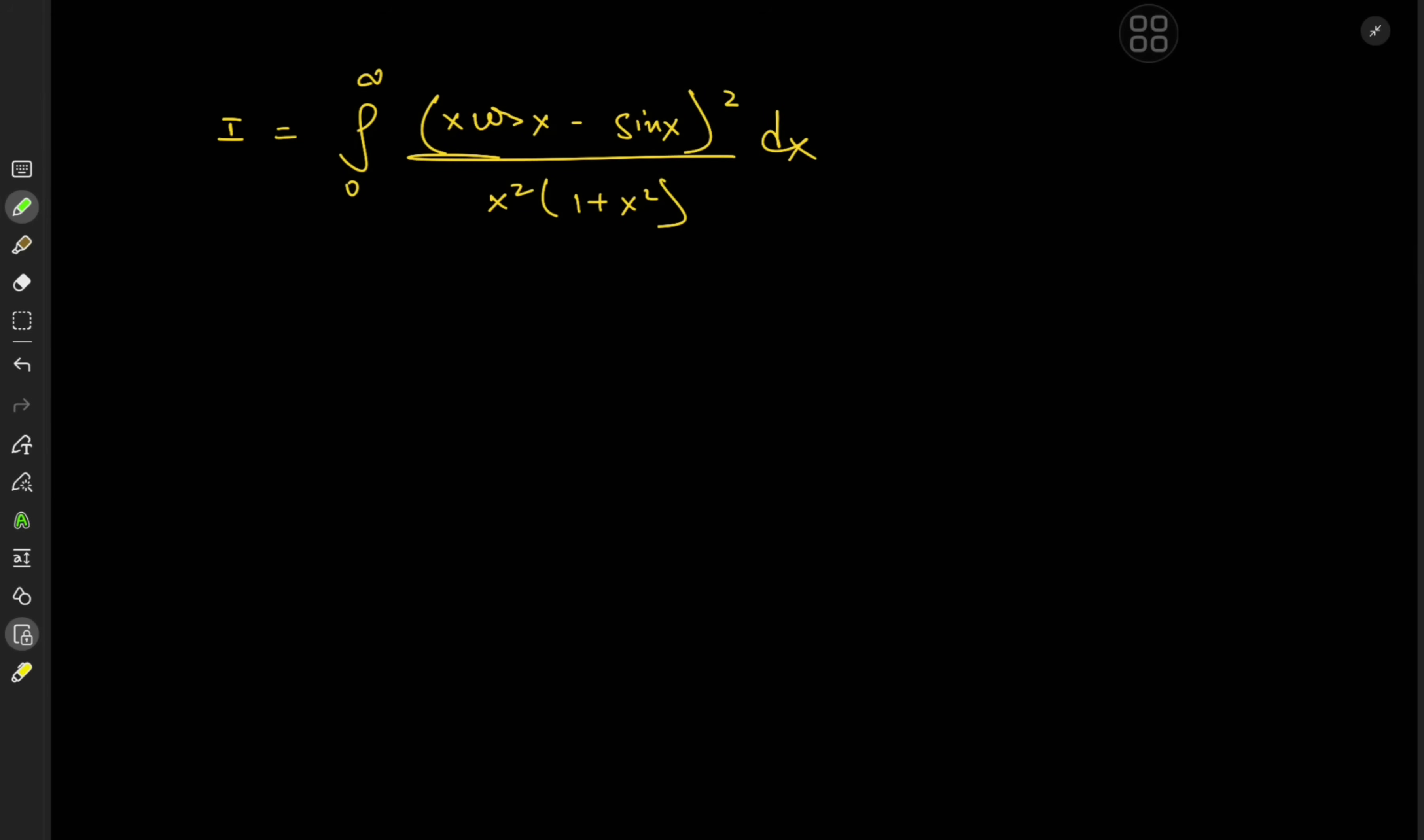My Govanen folks. Today we have the interesting looking integral from 0 to infinity of x times cosine x minus sine x whole thing squared over x squared times 1 plus x squared dx.